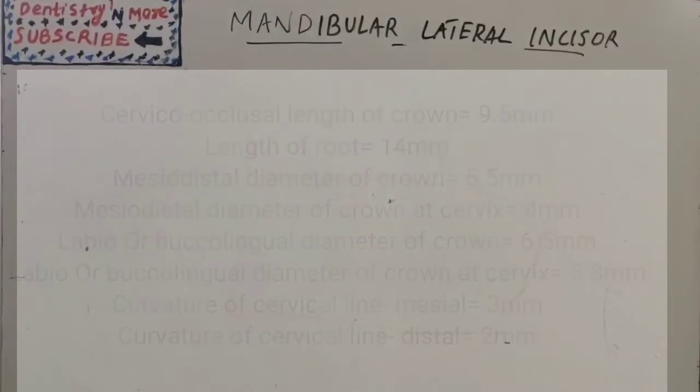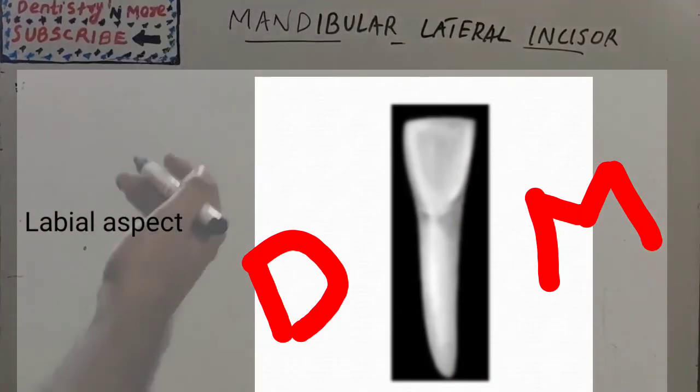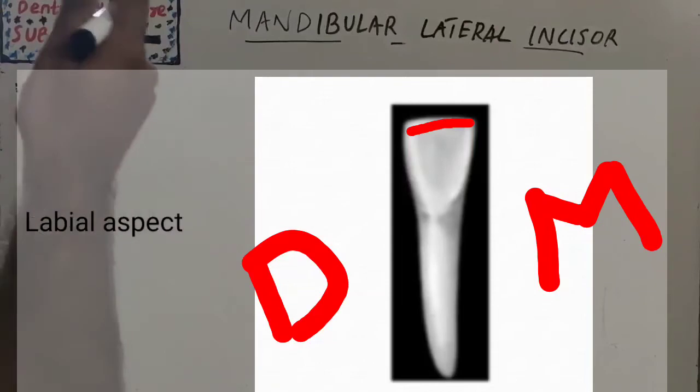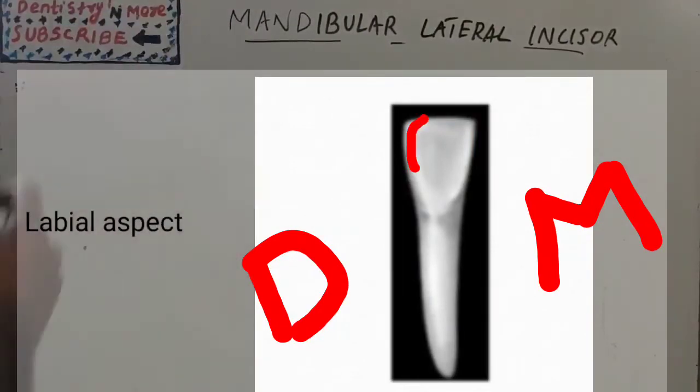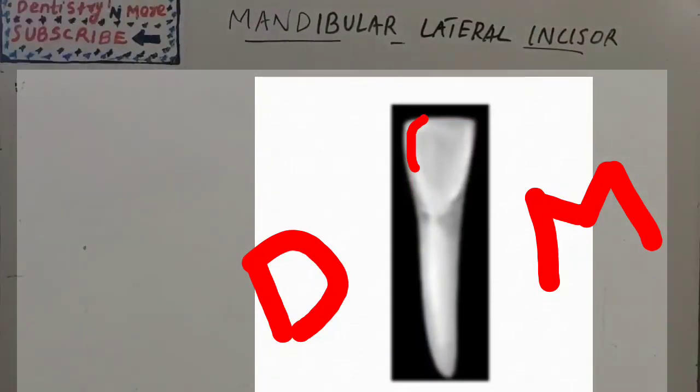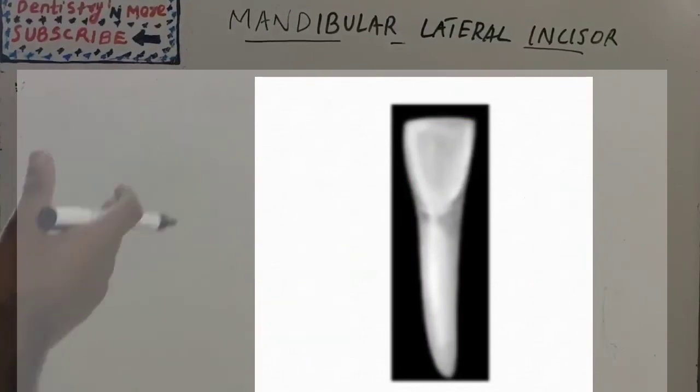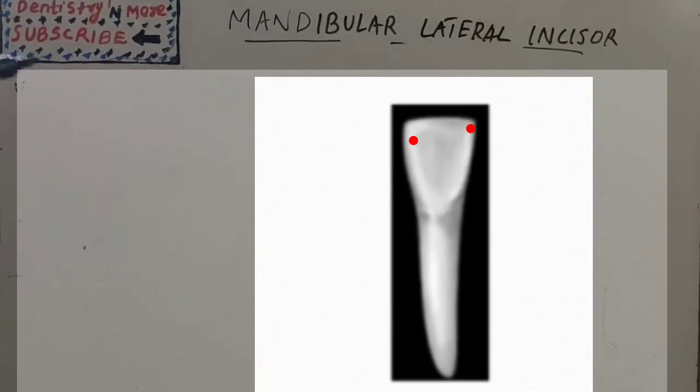The labial aspect: incisal margin may slope slightly gingival towards distal, so that results in a distal incisal angle that is more rounded than the same angle of central incisor. This feature creates a slightly shorter distal margin when compared to the mesial outline. Contact area on the distal is more cervically located than on the mesial, creating a more cervically located height of contour on distal outline.